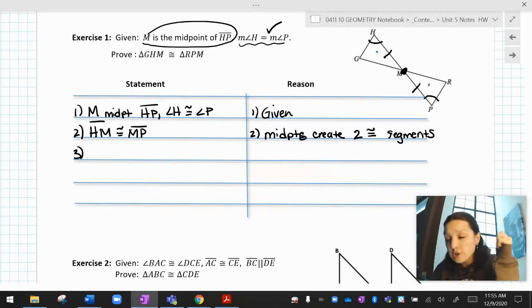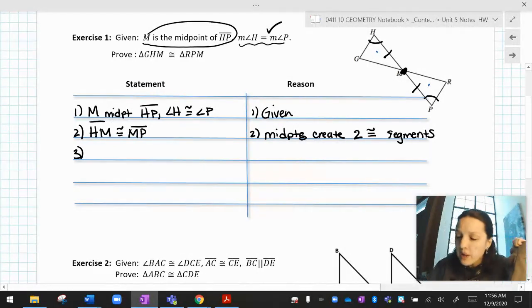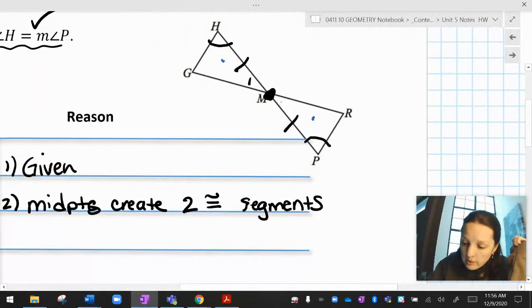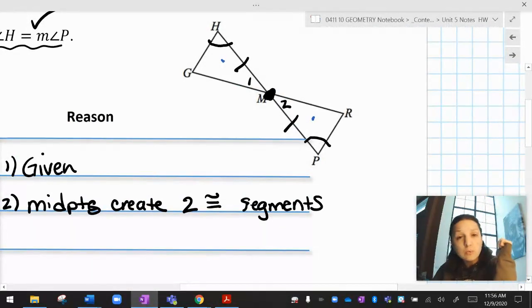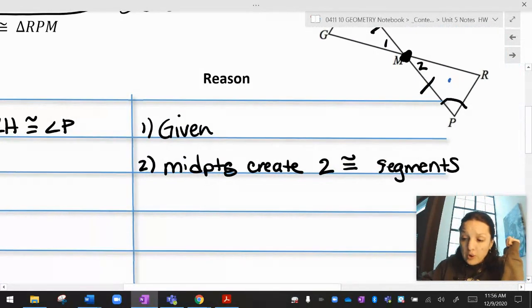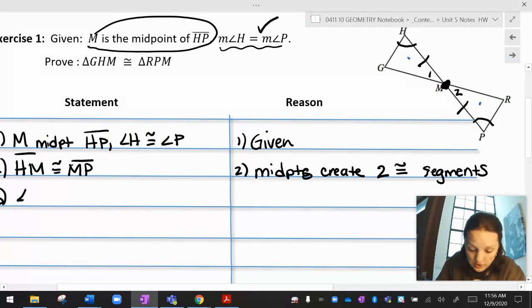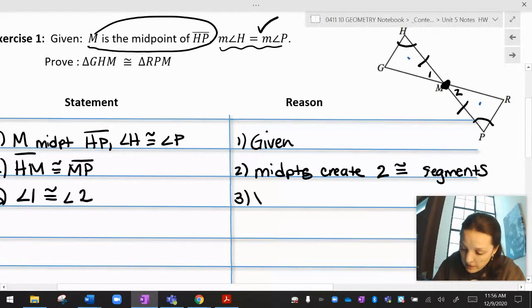When you have what I like to call bow tie triangles, these things, if you look at them, they kind of look like a bow tie, you always have vertical angles right here in the middle. I'll call those angle one and angle two. Vertical angles are always congruent. Nobody needs to tell you that they are. They just are. Angle one is congruent to angle two because vertical angles are congruent.